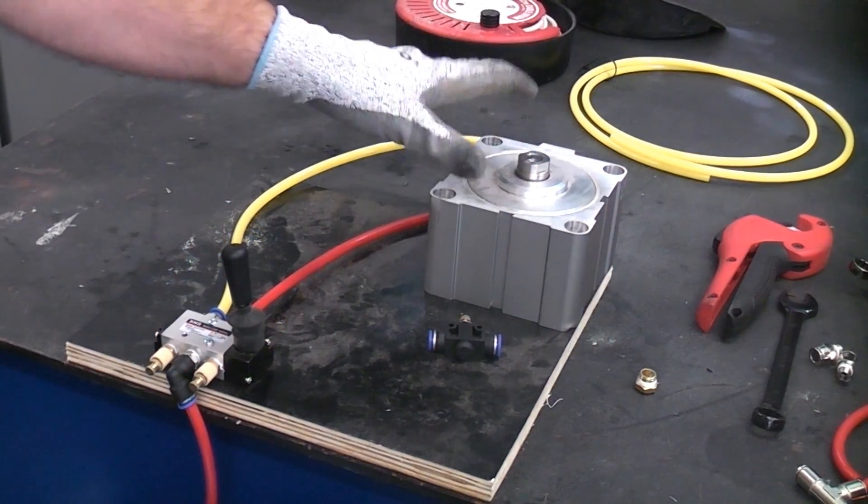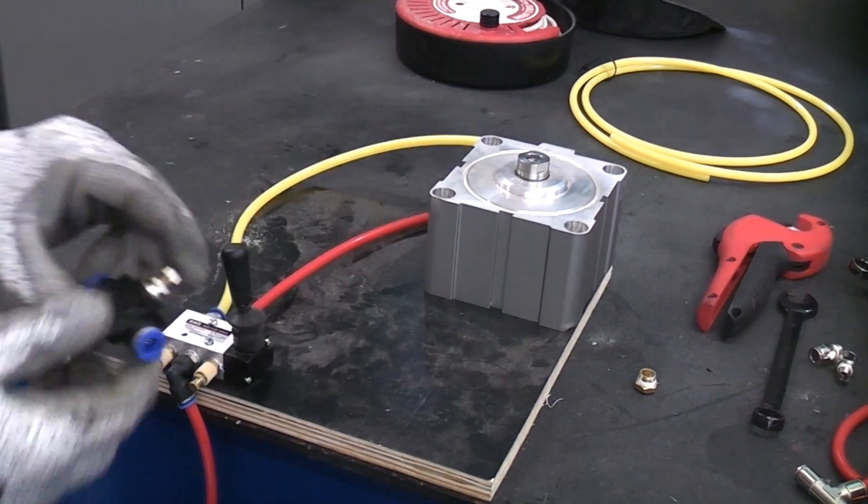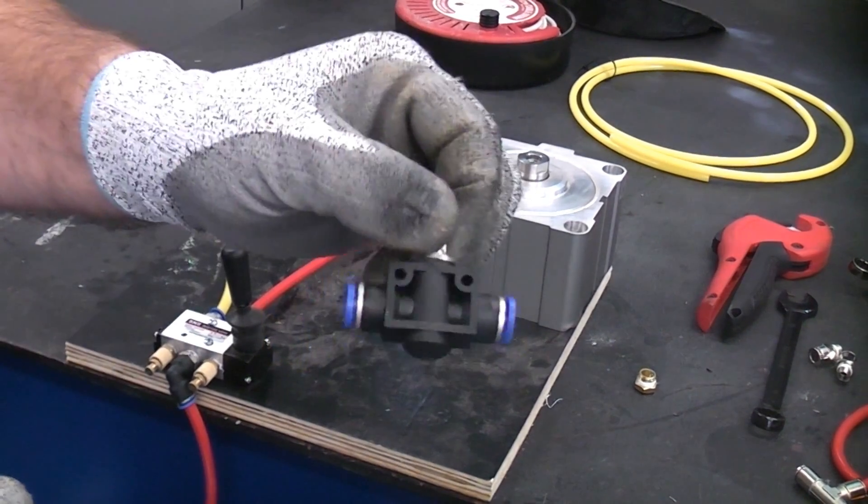To control the speed of a pneumatic cylinder is very easy. There are a couple of ways you can do it. One of them is by using an inline valve like that.